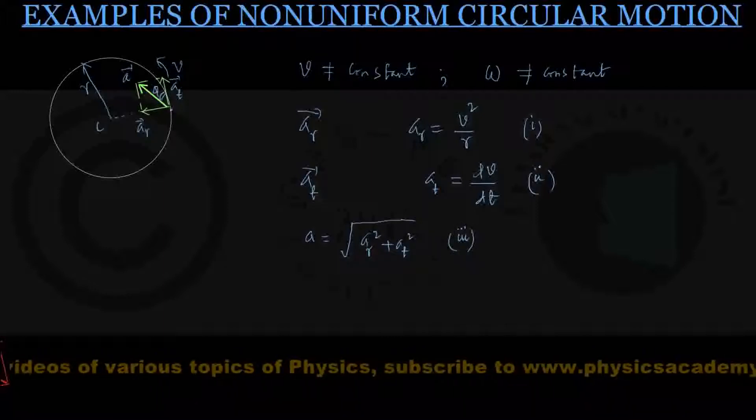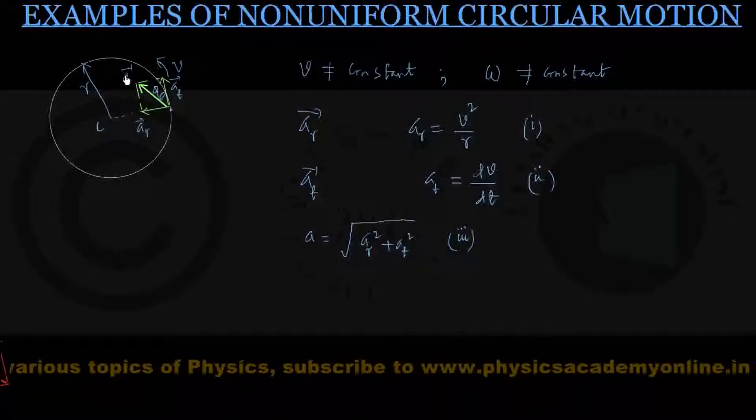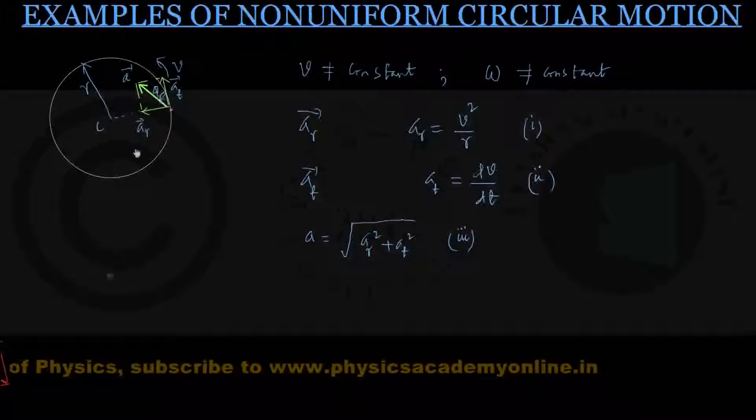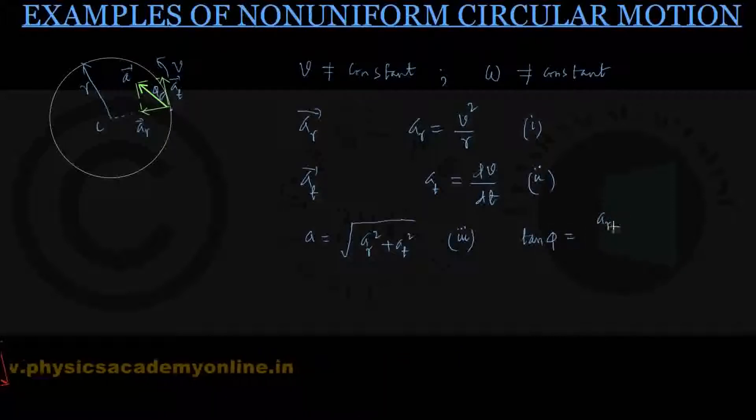And if the A vector, total acceleration vector, makes an angle of phi with the tangent, then tan phi, as you can see easily, is coming out to be magnitude of AR by magnitude of AT. And that is my equation number 4.